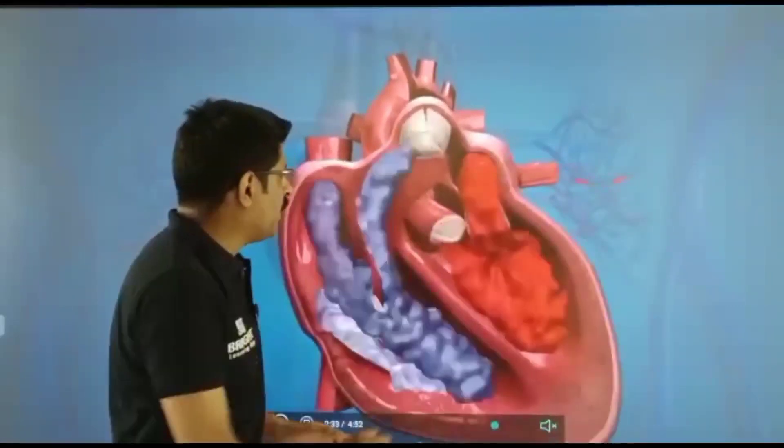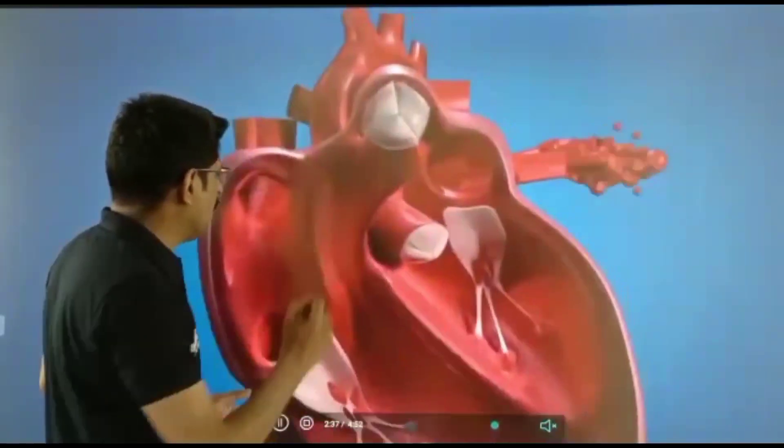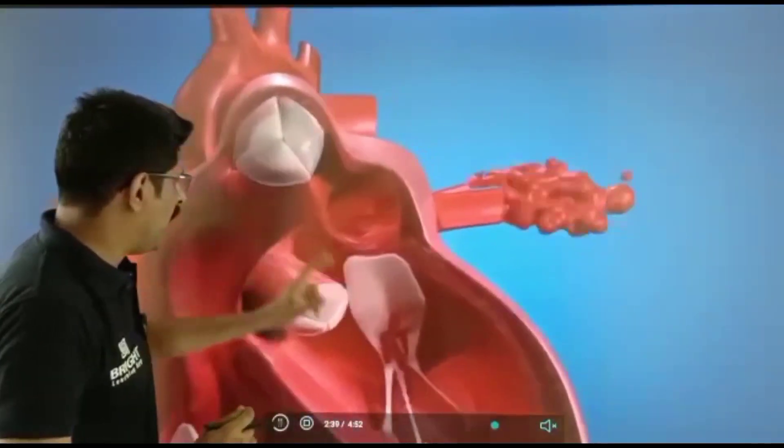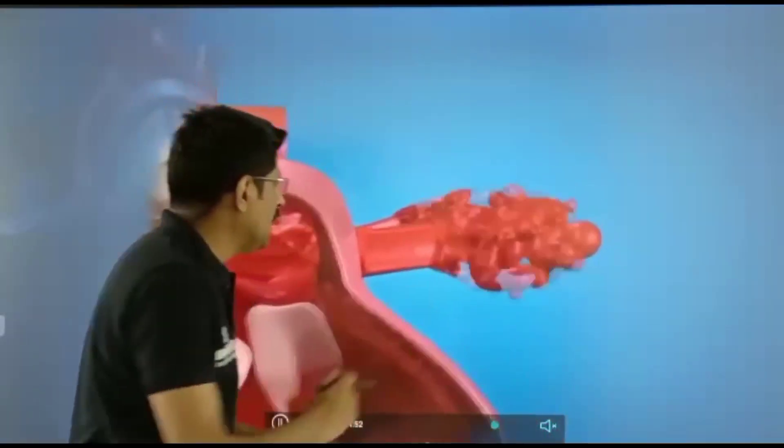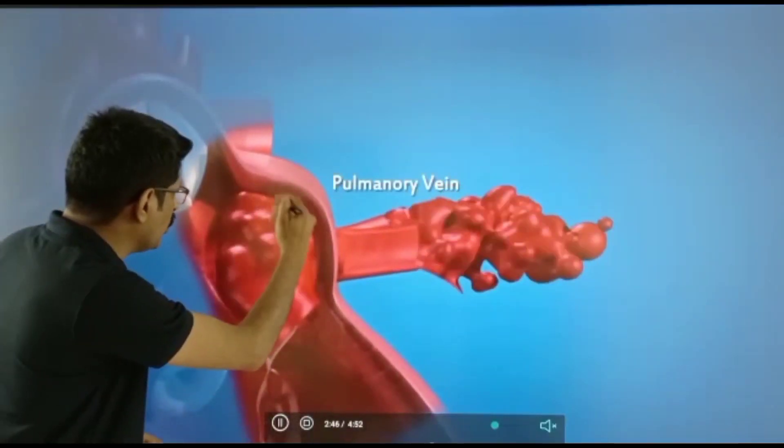The human heart has four chambers - atrium and ventricle. The pulmonary vein receives oxygenated blood from the lungs and it flows to the left atrium.